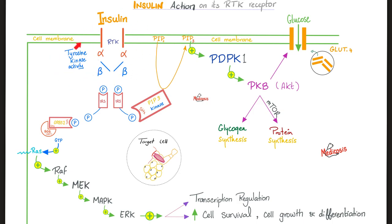Now we have activation — phosphorylation of the IRS: the insulin receptor substrate. When IRS gets phosphorylated, it gets activated. And then you have two stories: the story of RAS and the story of PIP3. The PIP3 story opens the gate; the RAS story helps the cell grow and multiply. So let's first start with the PIP3 story.